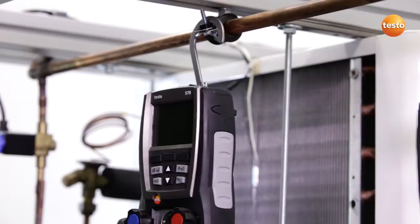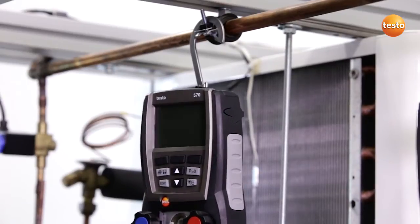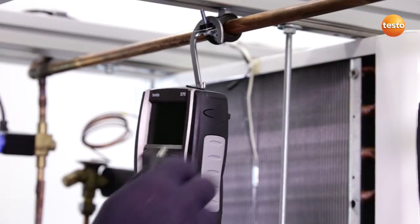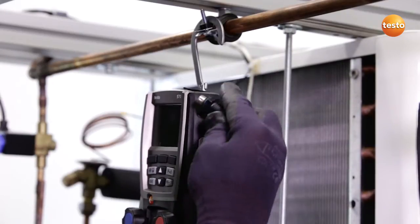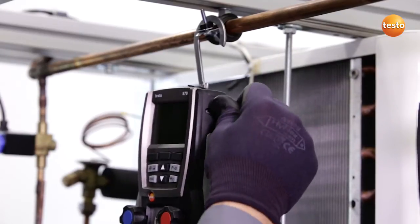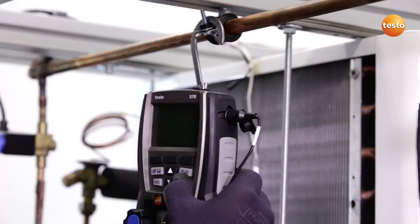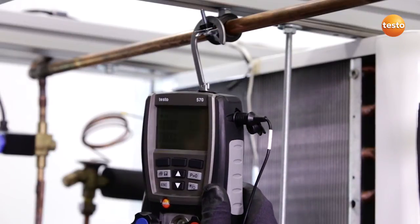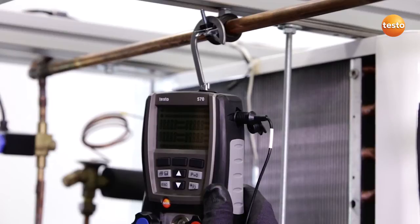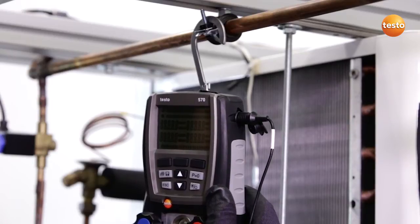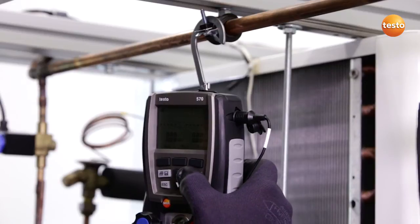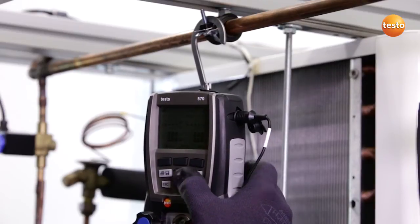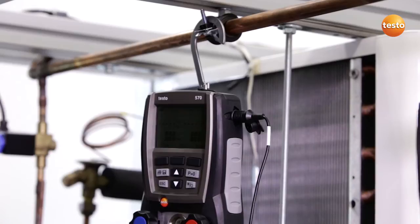For the pressure tightness test, I attach the instrument to a stable site close to the plant. I also need a temperature sensor which I can plug into the high-pressure side of the instrument and switch the instrument on. After a short self-test phase, I can zero the pressure sensors and the instrument is ready to go.